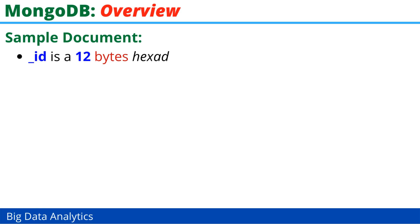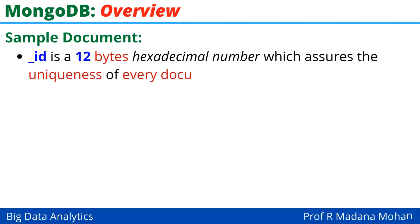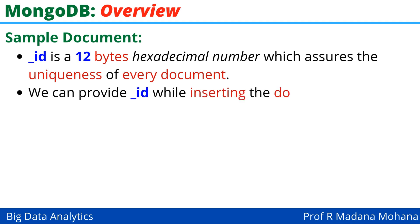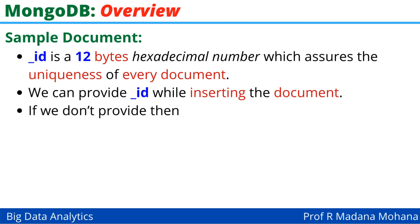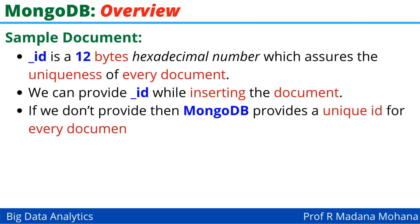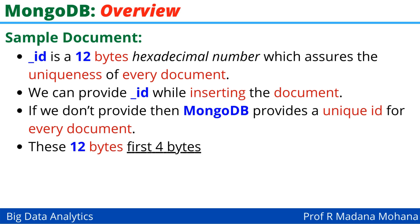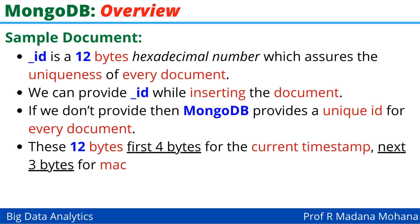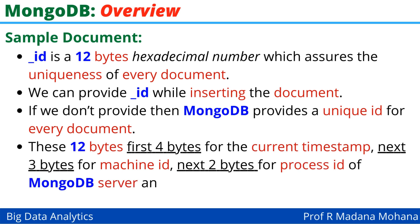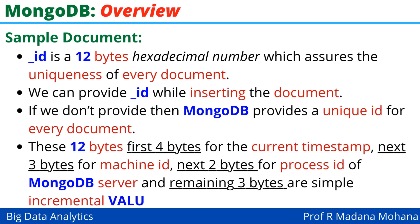The _id field is a 12-byte hexadecimal number that ensures the uniqueness of every document. You can provide an _id while inserting a document; if you don't, MongoDB provides a unique _id automatically. Of the 12 bytes: the first 4 bytes are used for the current timestamp, the next 3 bytes for the machine ID, the next 2 bytes for the process ID of the MongoDB server, and the remaining 3 bytes are a simple incremental value. This concludes the overview of MongoDB.